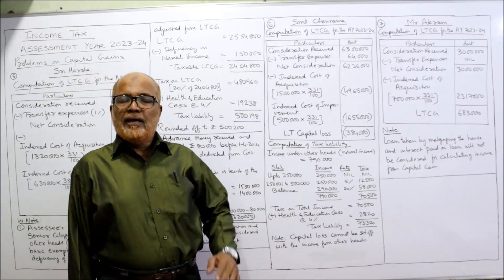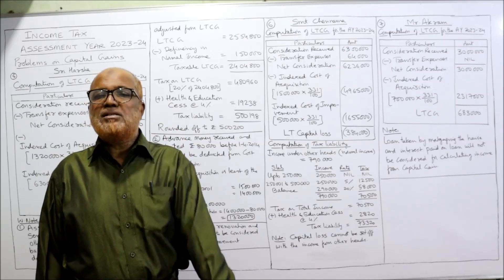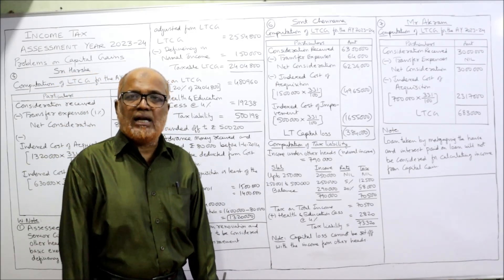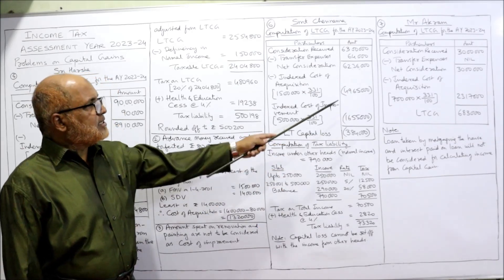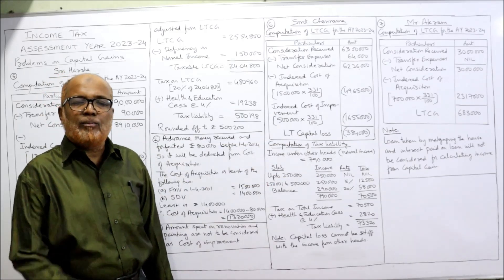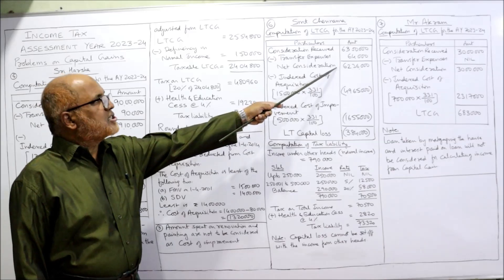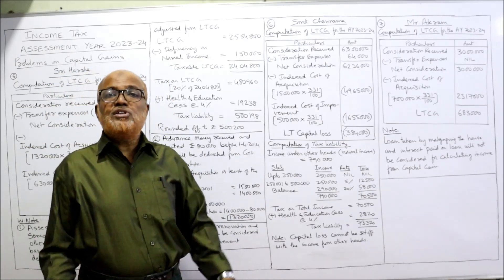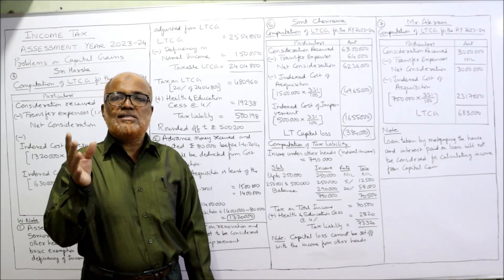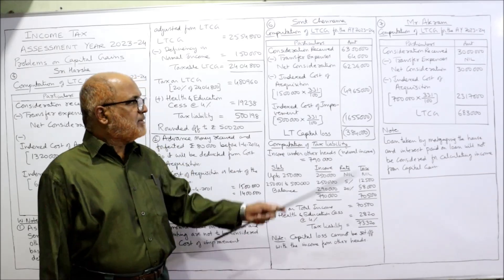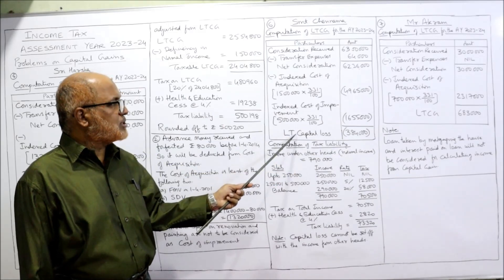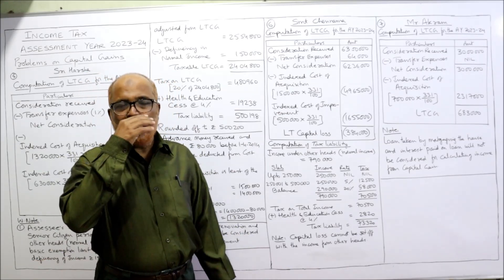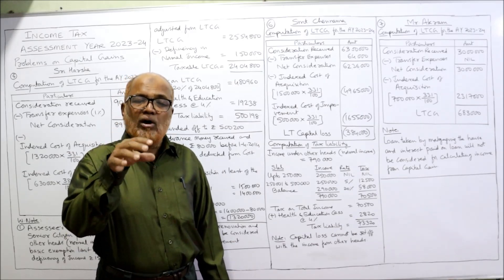Indexed cost of improvement: she added one more floor in August 2001 for Rs. 5,00,000. The index for 2001-2002 was 100. So indexed cost of improvement = Rs. 5,00,000 into 331 divided by 100 = Rs. 16,55,000. Now, Rs. 62,36,000 minus Rs. 49,65,000 minus Rs. 16,55,000 gives a negative figure of Rs. 3,84,000. Negative means loss — this is the first time we come across a capital loss, not capital gain. Rs. 3,84,000 long-term capital loss.